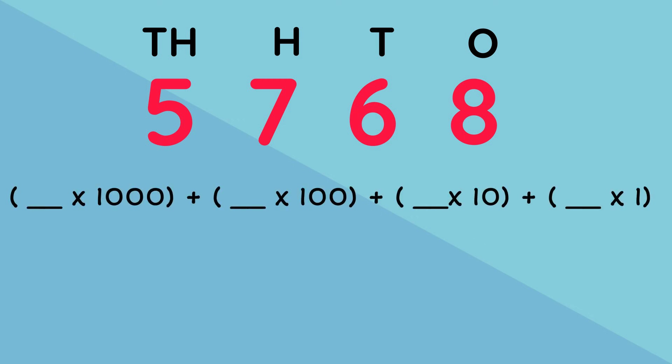Our last example before we go, can we figure out the missing numbers? 5768 in expanded notation, what numbers would you put? Well, 5 is in our thousands place so it goes first, followed by 7 in our hundreds place, then 6 in our tens place, and lastly 8 in our ones place.